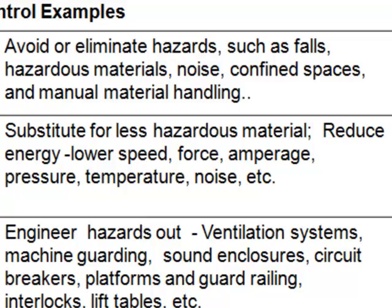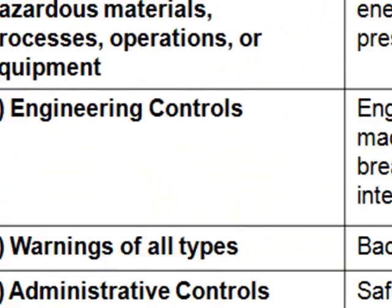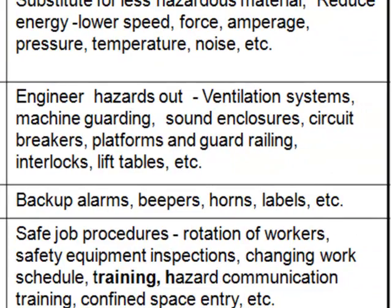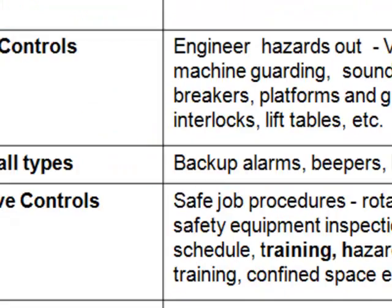The third level is engineering controls, where we work to engineer the hazards out. This could include ventilation systems, machine guarding, sound enclosures, circuit breakers, platforms and guardrails, interlocks, lift tables. We're building into the design of the job something that keeps the person or an object away from the hazard.